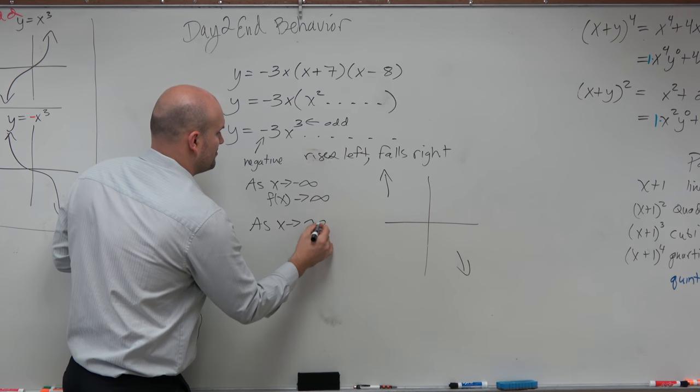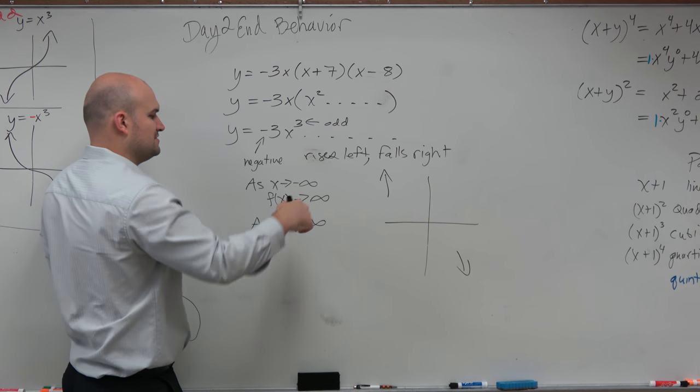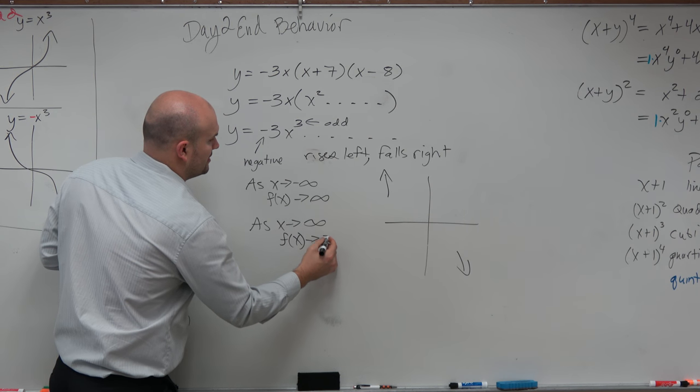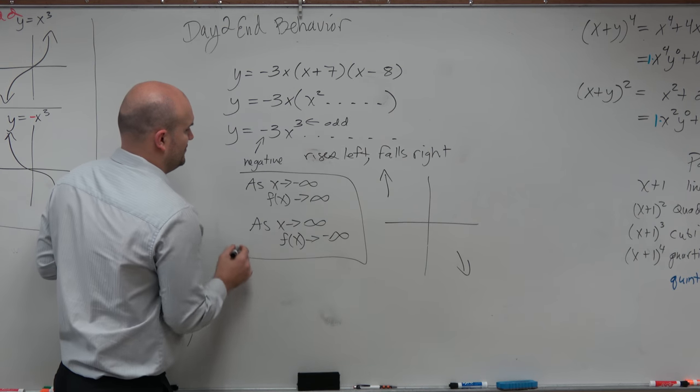And as x approaches positive infinity, which would mean as we go to the right, you can see the graph is going down. So we'd say f of x approaches negative infinity. So that is how I'd write the end behavior there.